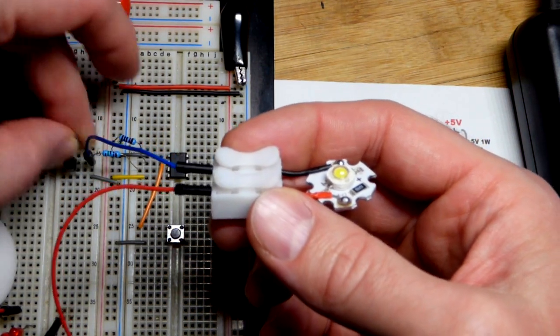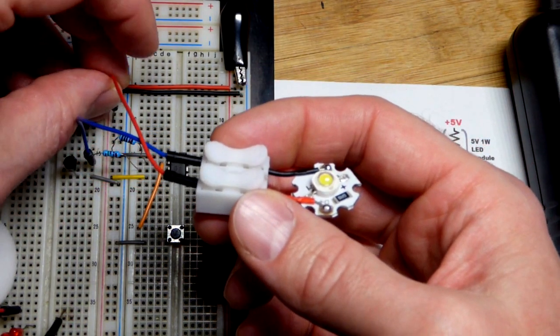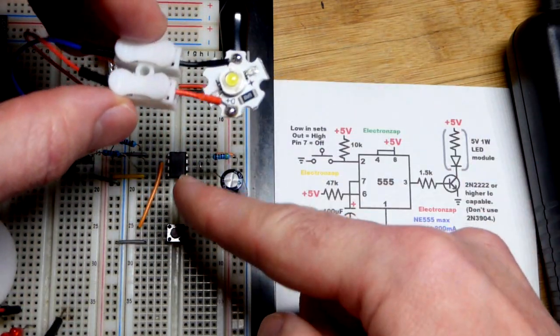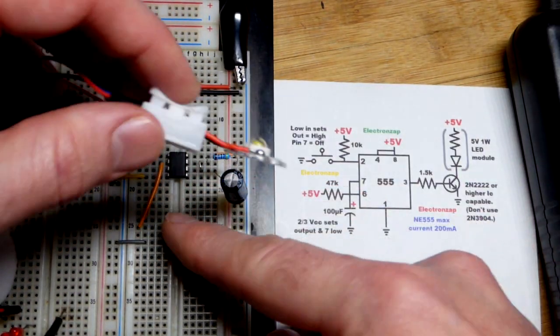And we have this quick release and quick connect connector right there. All I got to do is squeeze it. I can move the wires whenever I want or add them. So this is a 555 timer wired in monostable mode.